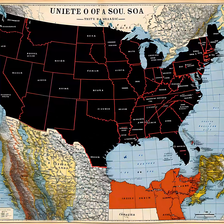Furthermore, Taney's opinion asserted that the Missouri Compromise of 1820, which had prohibited slavery in certain territories, was unconstitutional. The court held that Congress did not possess the power to ban slavery in federal territories, effectively declaring that slavery could legally exist in all states and territories.